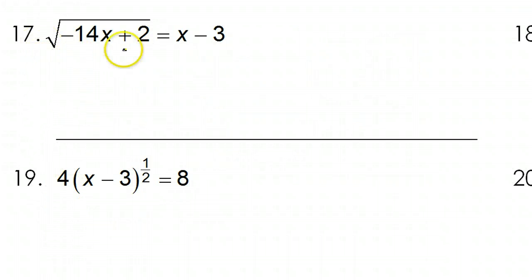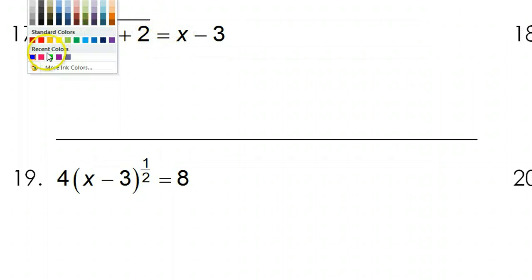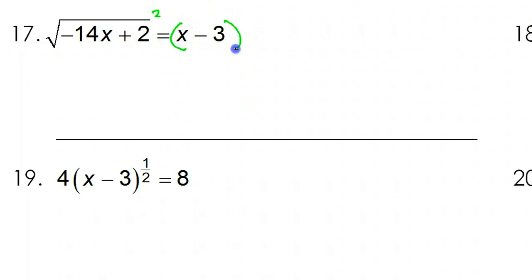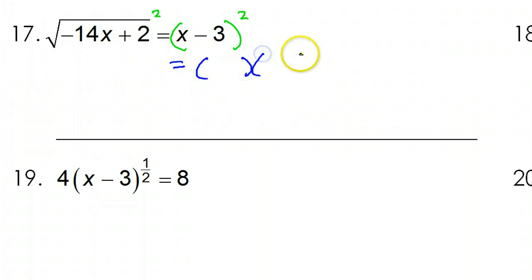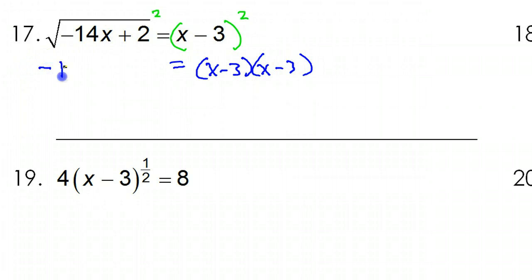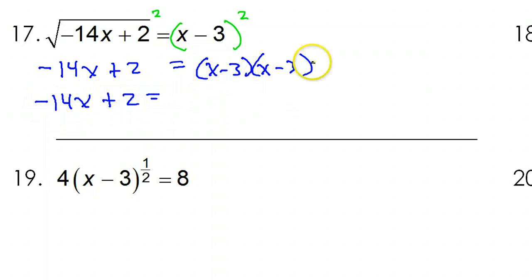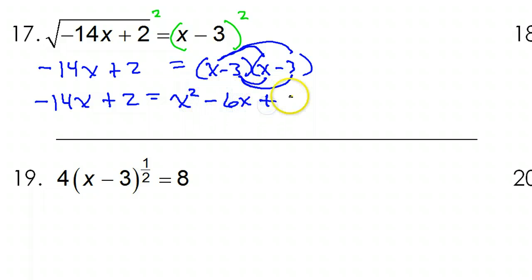Be careful with number 17. It's immediately time to square both sides, but we have this binomial over here. When you square a binomial, that's going to be (x minus 3)(x minus 3) — we're going to have to double distribute. Meanwhile, over here we just have negative 14x plus 2. Double distributing gives us x times x, x times negative 3, negative 3x, and negative 3 times negative 3, giving x squared minus 6x plus 9.